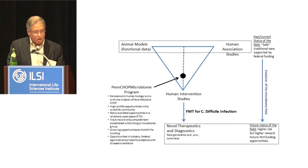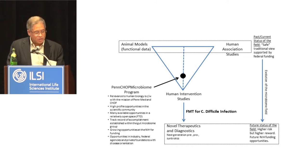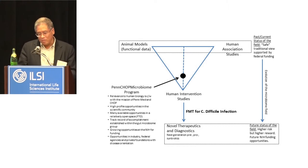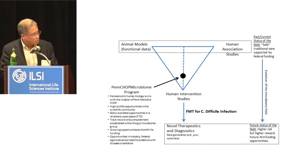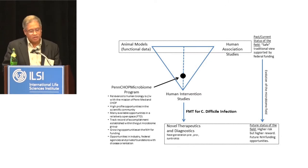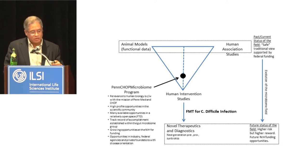To move along that axis, we spun up a microbiome program across the entire campus of the University of Pennsylvania called the Penn-CHOP Microbiome Program. Part of that program is focused on human intervention — actually doing human subject studies to prove cause-and-effect relationships in human biology. We believe the only way to get down this axis is to begin studying humans to understand whether what we study in animal models is actually relevant to human disease.